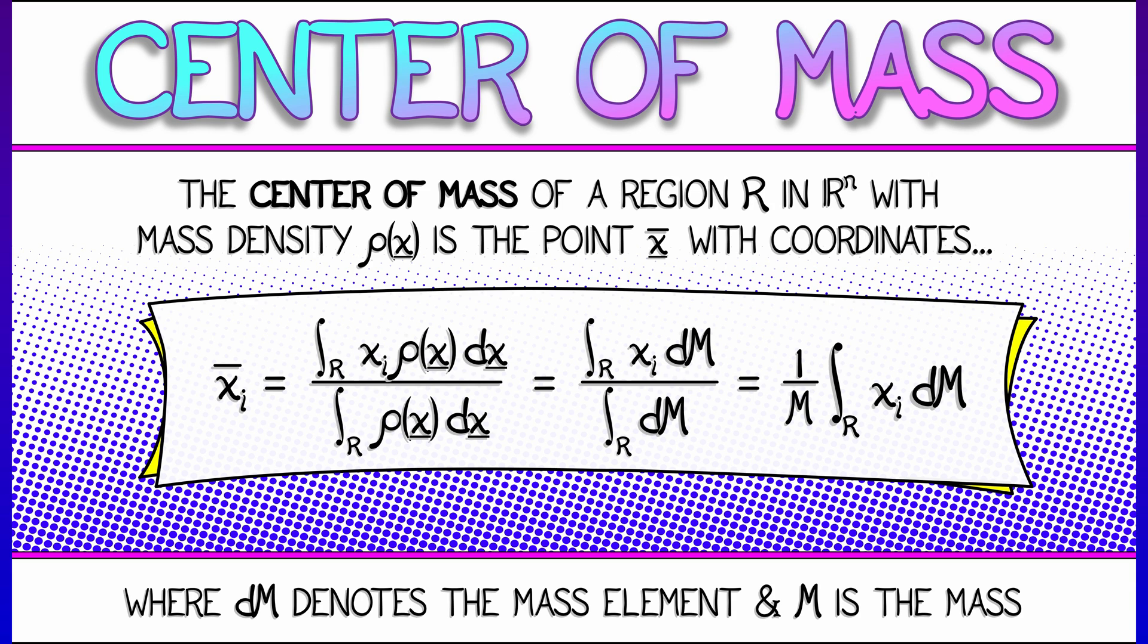So if your density is constant, you're really just getting the centroid. But if your density varies from point to point, then you might want to compute the center of mass.